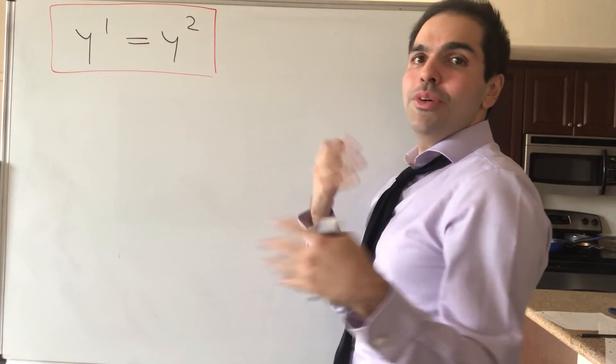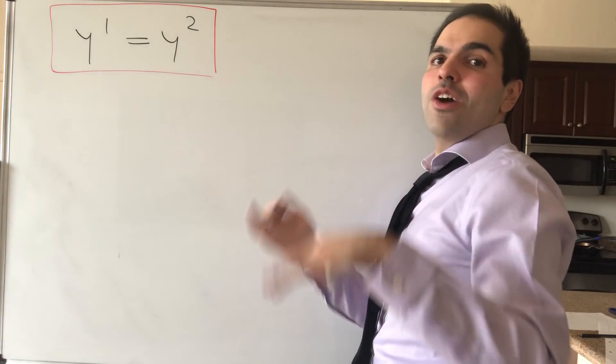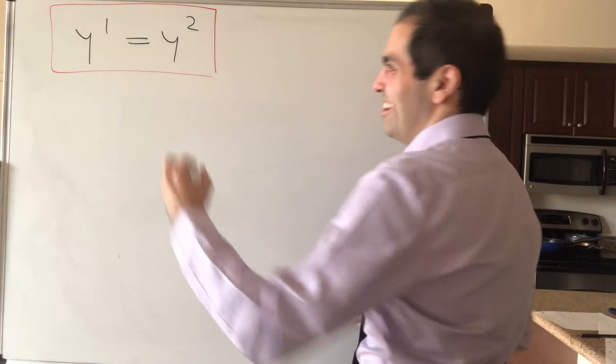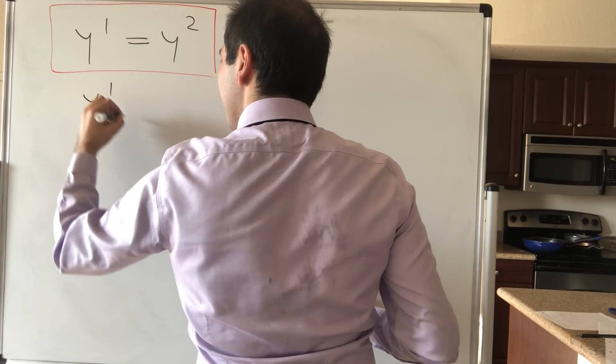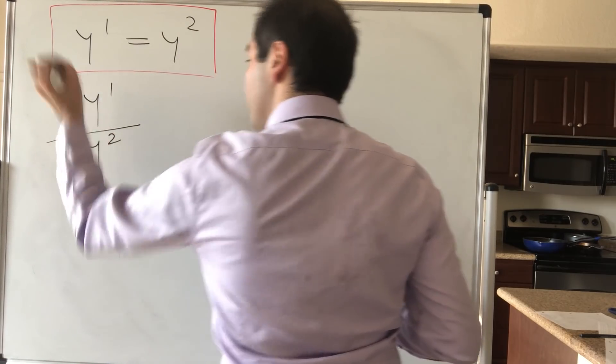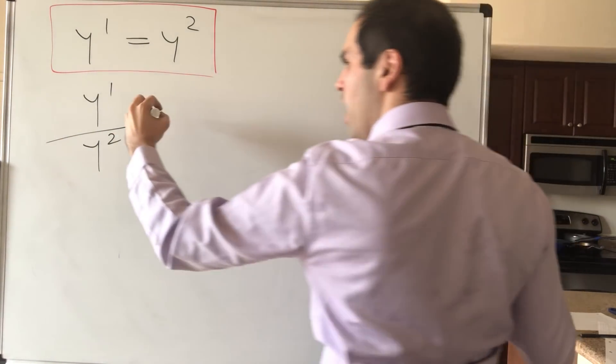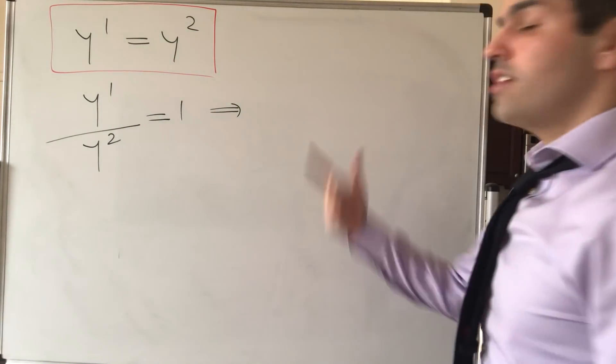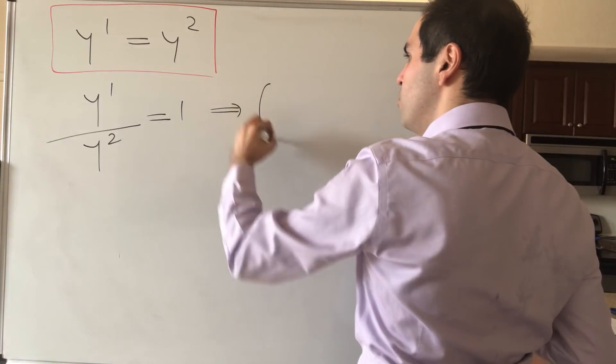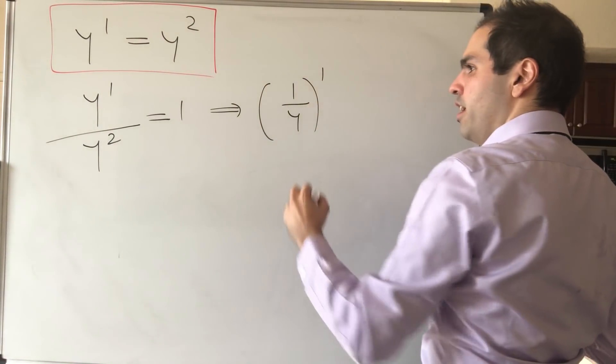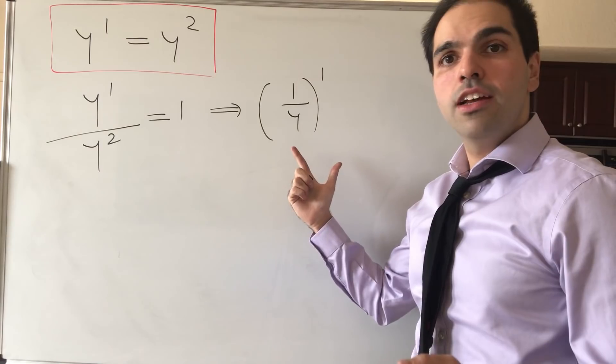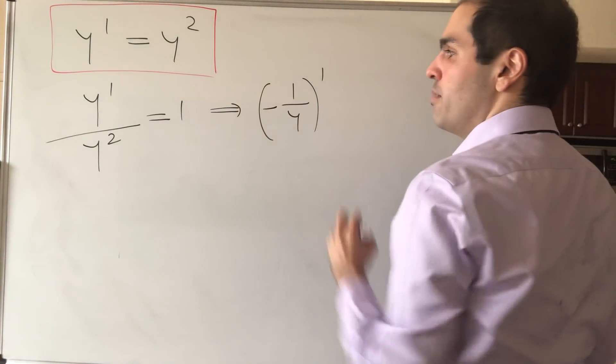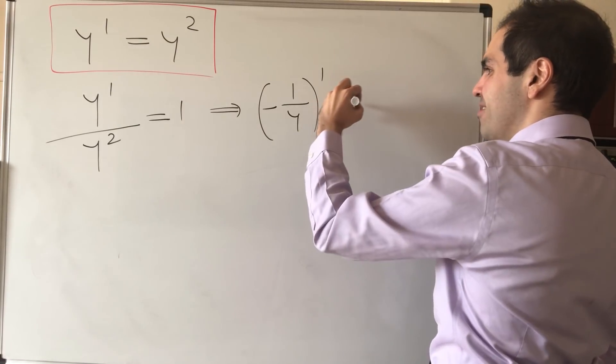Again, you could do the method with dy over dx and cross multiply, but not on this channel. So instead, let's just divide by y squared. So y prime over y squared equals 1. And this almost looks like the derivative of 1 over y, except if you do this, you would get a minus y prime over y squared. So let's put a minus here, just to correct it.